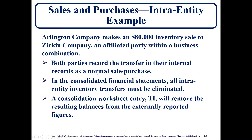We looked at intra-entity transactions when we covered the equity method in chapter 1, and we observed that we had to defer the gross profit from the inventory because it takes place between companies where one has significant influence over the other. When doing consolidated financial statements, it's like we're selling inventory to ourselves — because as we combine the financial statements from the parent and subsidiary, it's a redundant transaction. We cannot recognize this deferred gross profit until we actually sell it to an outside company, one that is no part of our consolidated entities.